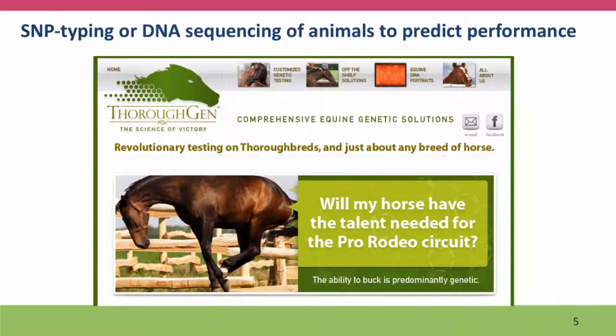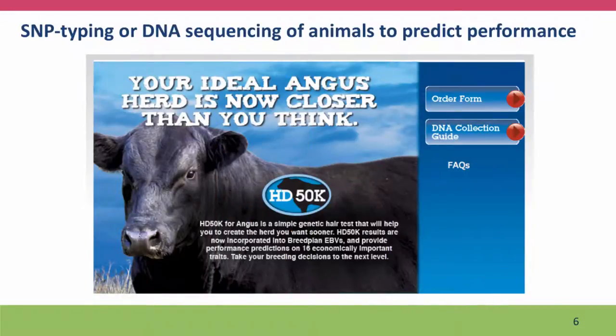SNP typing, or DNA sequencing, can also be used to predict performance in some of the same ways that we test humans for particular genetic diseases. Thoroughbreds aren't just typed to confirm who their parents are — they're also typed to gain clues as to their phenotype. Here is a test that is claimed to predict whether or not a horse will be able to buck ferociously enough to be successful in the pro rodeo circuit. And here we have a test for Angus cattle to help determine the parentage and the phenotypes of your cattle, providing performance predictions on 16 economically important traits.